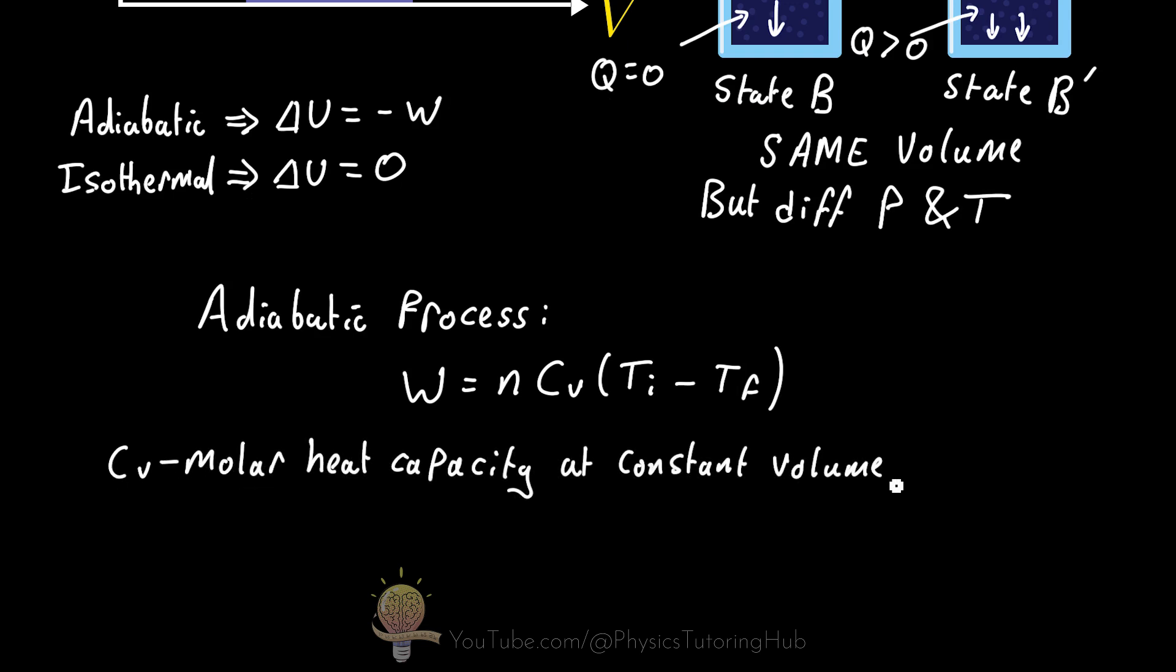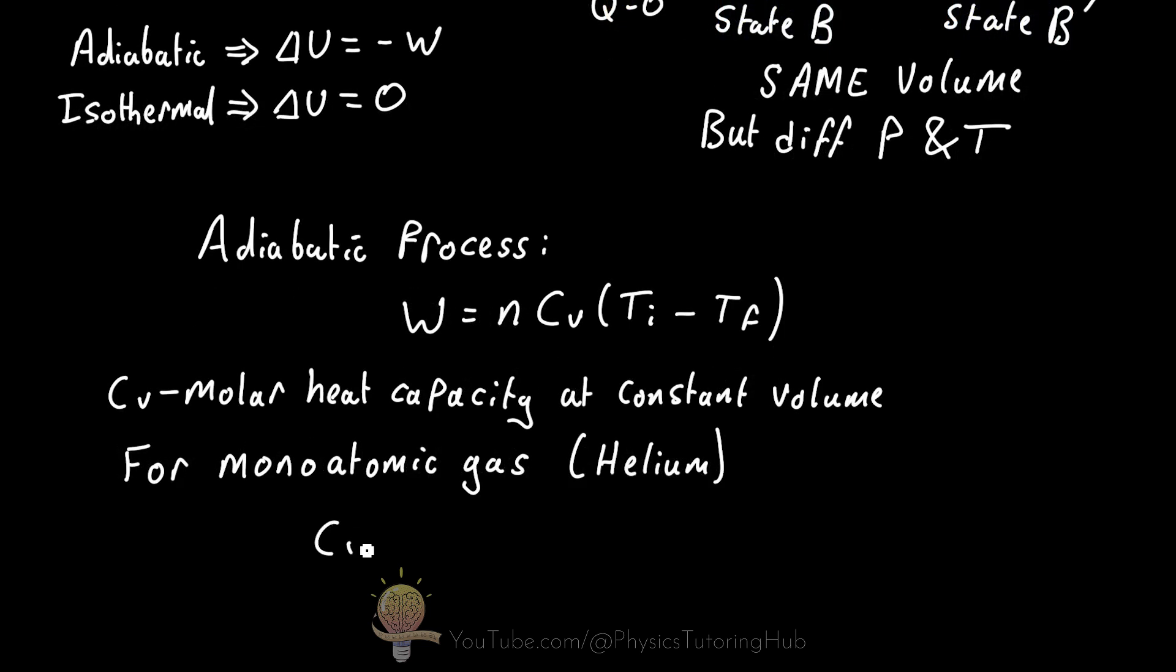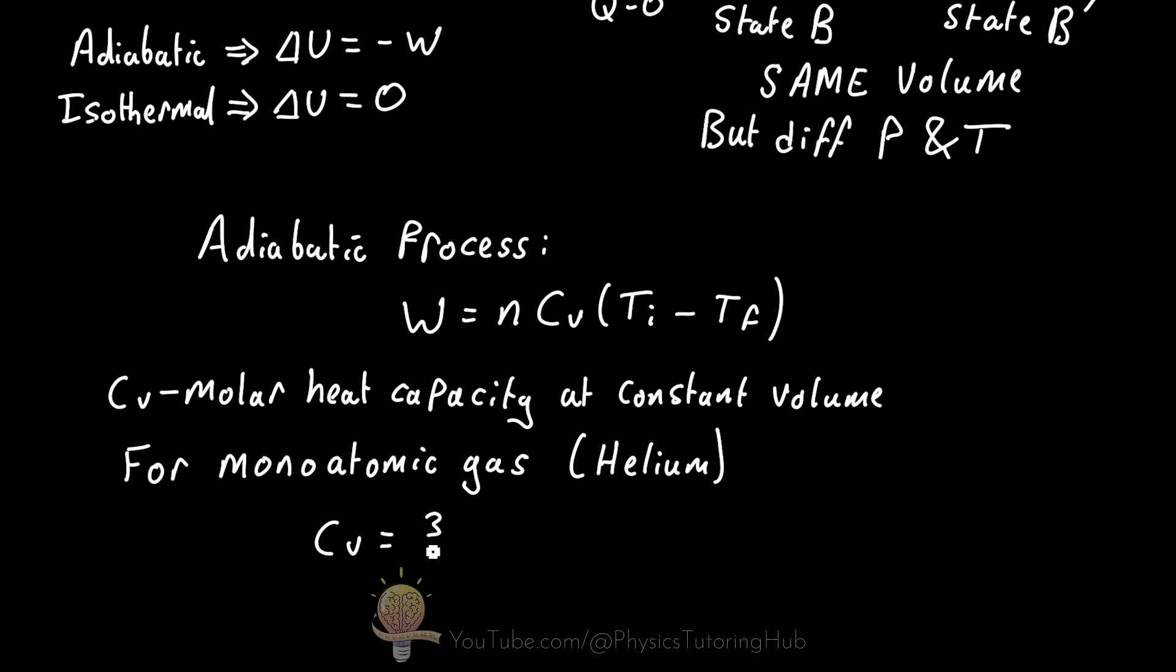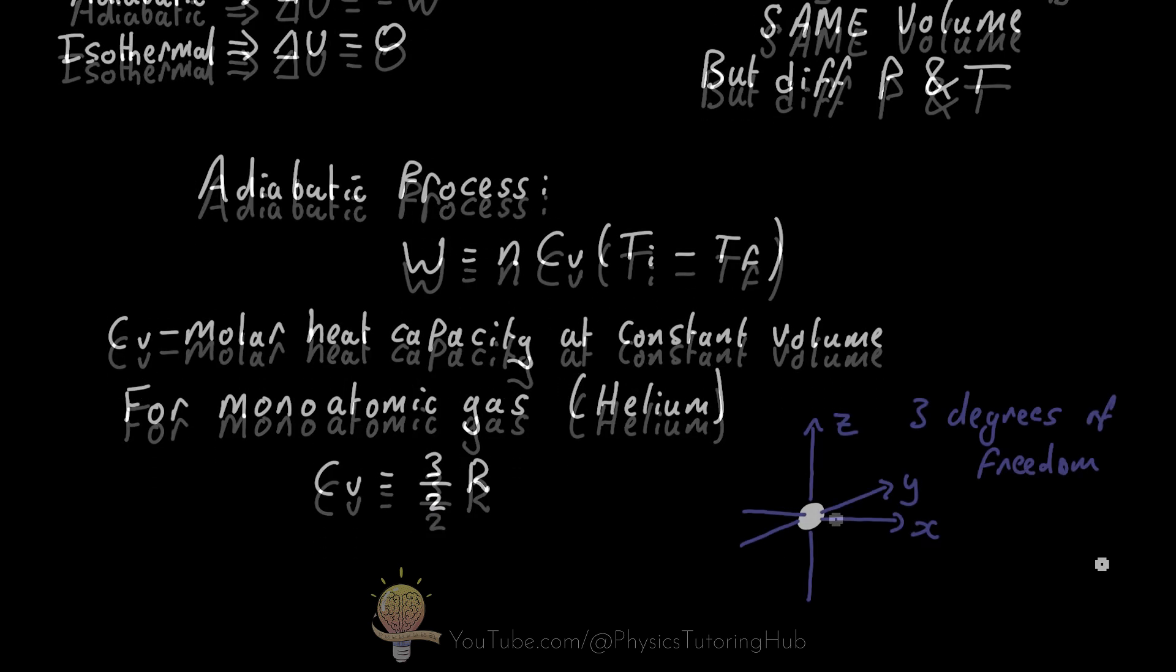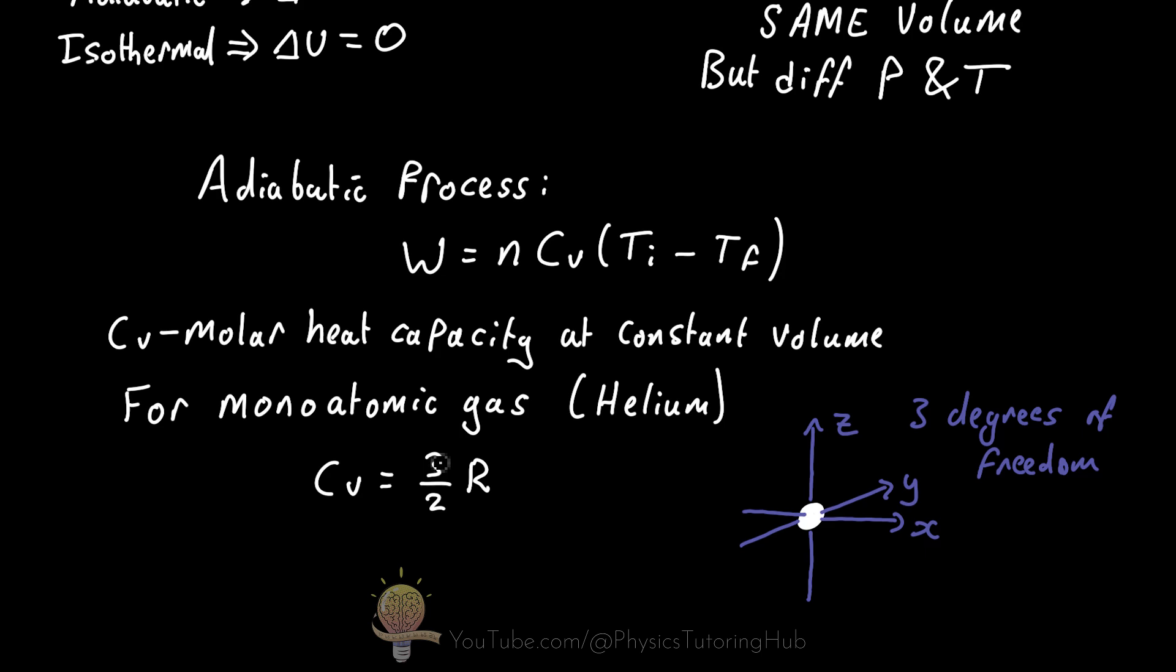This has a specific value for a monoatomic ideal gas: C sub v is 3 over 2 multiplied by the universal gas constant. This 3 comes about from the number of degrees of freedom a monoatomic gas has or the atoms in a monoatomic gas has.